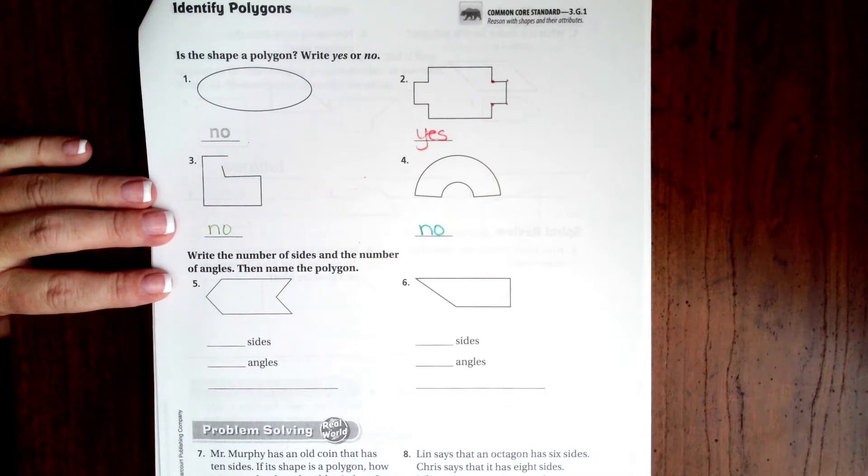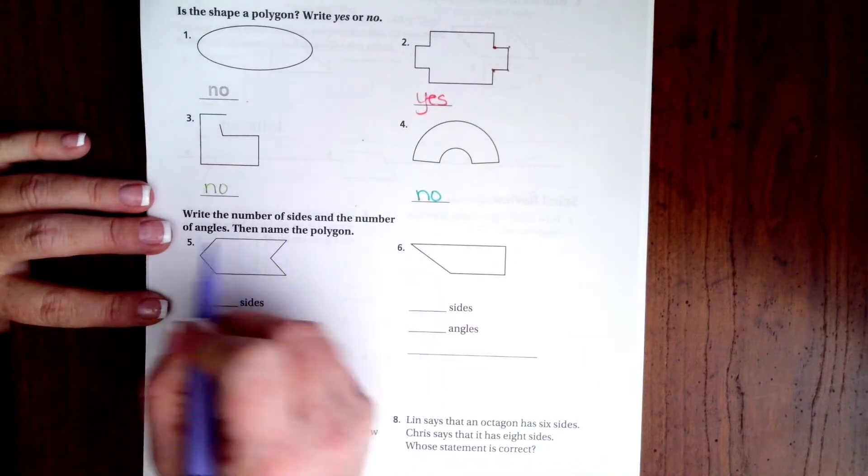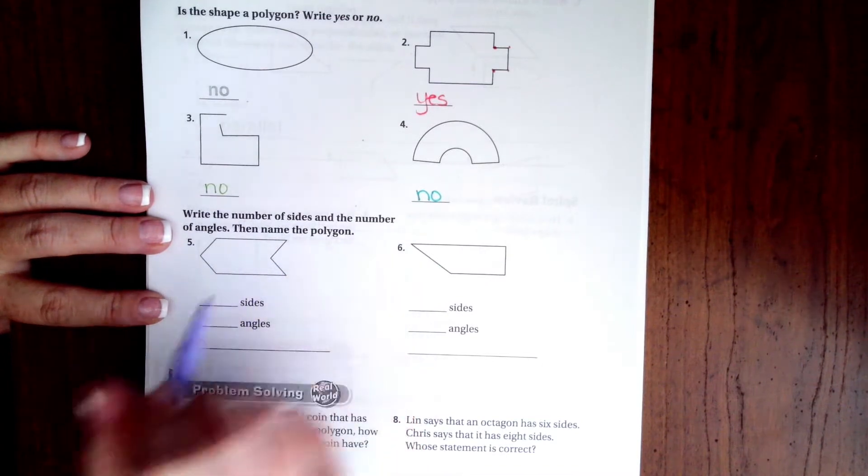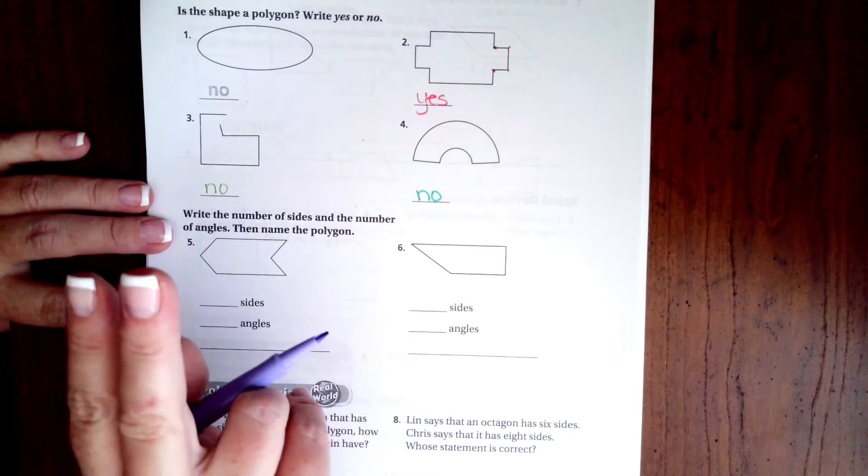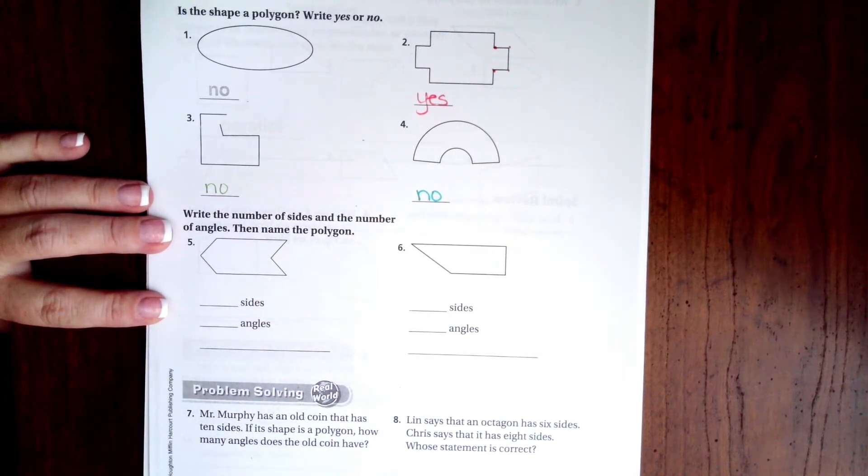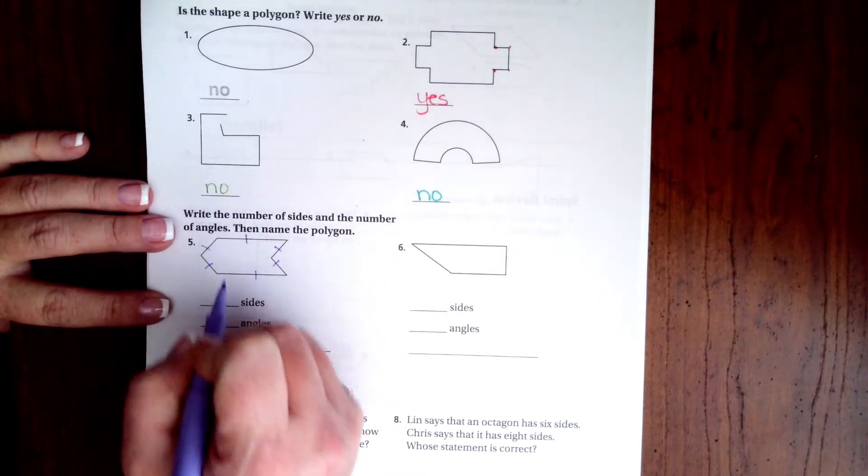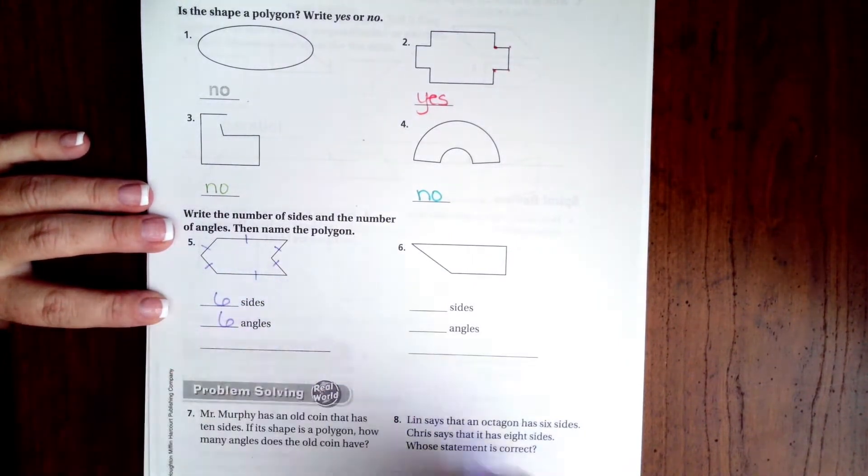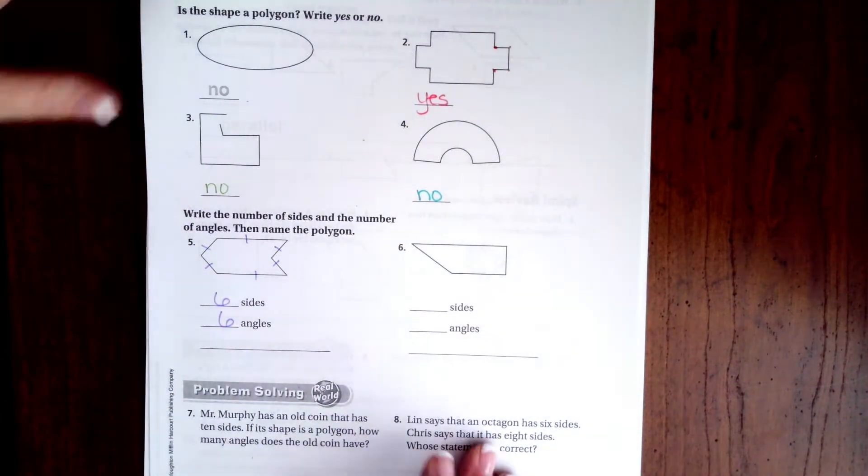So now we're going to go down to number five and it says to write the number of sides and the number of angles. Remember that those two numbers match. So if you have two sides then you should have two angles. If you have six sides you should have six angles. Eight sides, eight angles. They should match. This one has one, two, three, four, five, six, so both of them will be six. You guys go ahead and do number six.